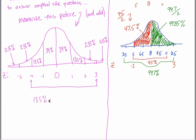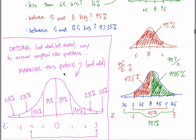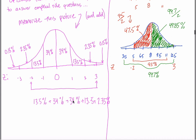How much area is shaded? That's 13.5% plus 34% plus 34% plus 13.5% plus 2.35%. You add those all up: 34 and 34 is 68, 13.5 and 13.5 is 27, 68 and 27 is 95, plus 2.35 gets you 97.35%.